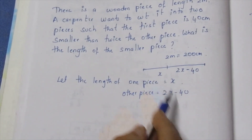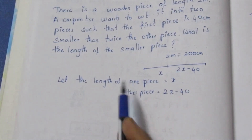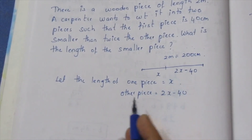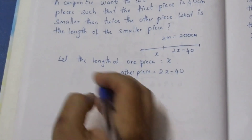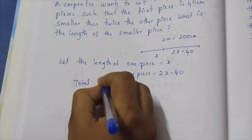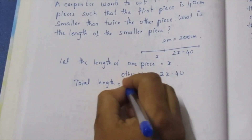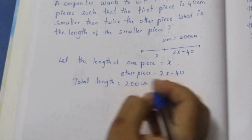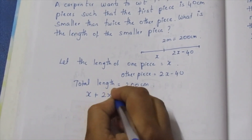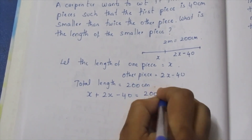Now, the total length is 200cm. So we write the equation: x plus 2x minus 40 equals 200.